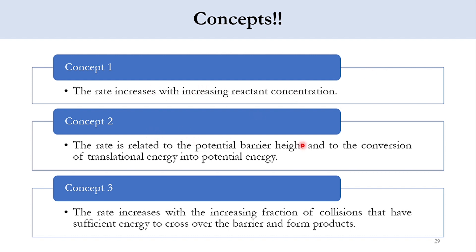For the second concept, the rate is related to the potential barrier height and to the conversion of translational energy to potential energy. This concept involves activation energy. As discussed before, the higher the value of activation energy, the more will be the barrier for the system, and accordingly the barriers would be different for exothermic and endothermic reactions.